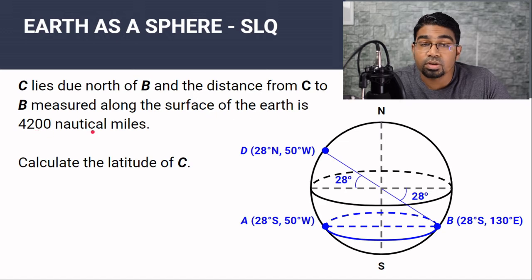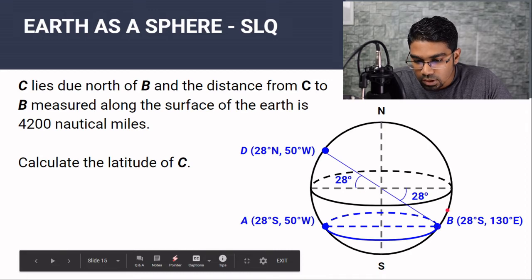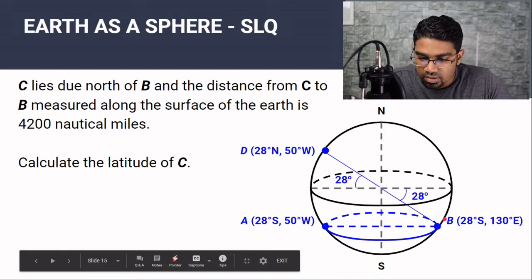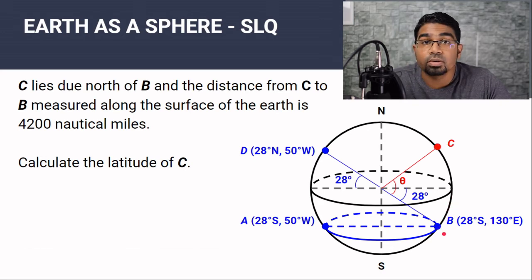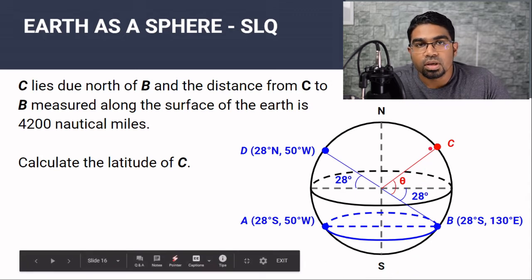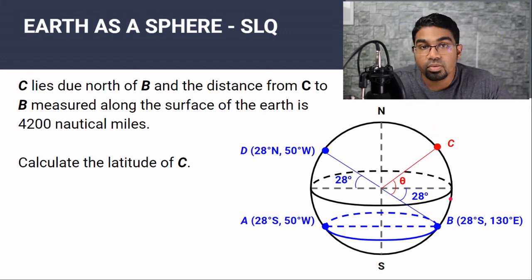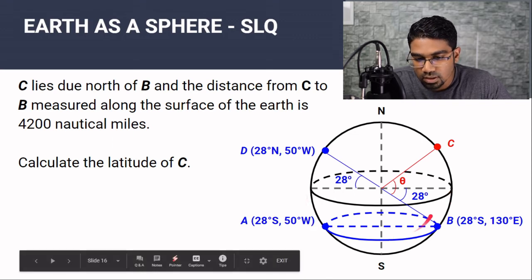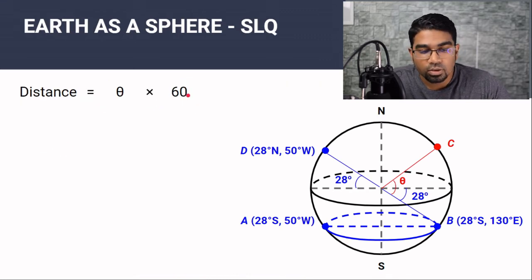C lies due north of B and the distance from C to B measured along the surface of the Earth is 4200 nautical miles. Find the latitude of C. Since C is due north of B, it lies along the same longitude as B. When dealing with distances along a great circle — the largest circle that can be formed on a sphere — the distance formula is simply: distance = θ × 60.